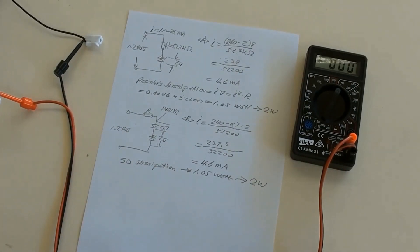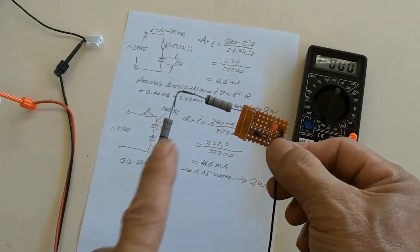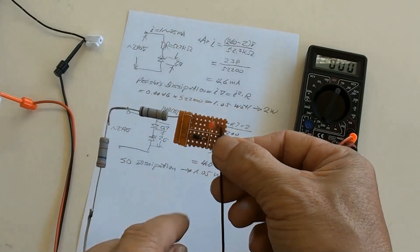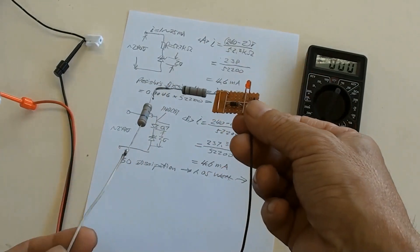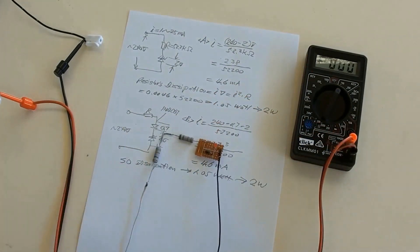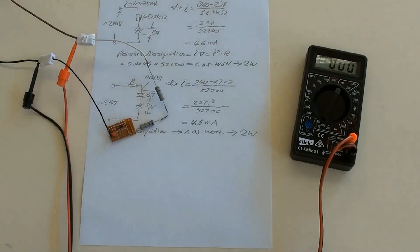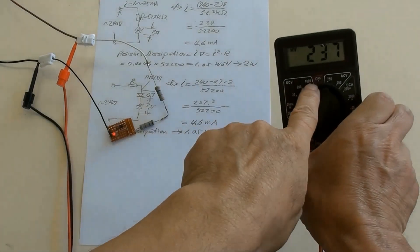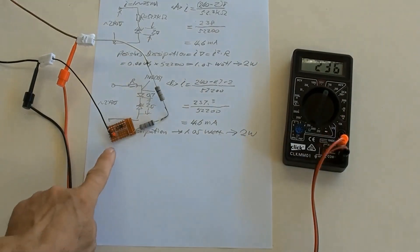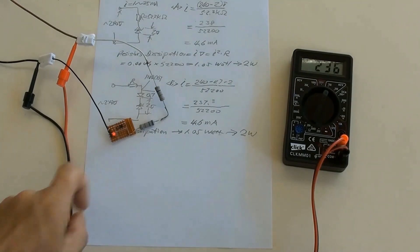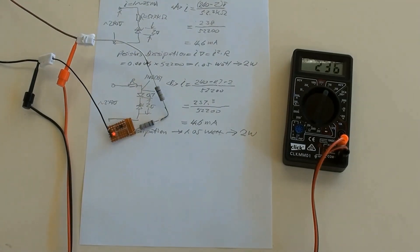The actual circuit is here: two resistors with the same combined value as the previous circuit, a diode, and a 2-volt LED. The circuit has been connected to the power supply. Switched power on — the power's voltage was 236 volts and the LED lit. Power off. Again, switched power on, LED lit, and power off.